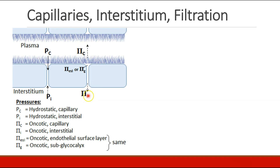We have interstitial oncotic pressures. And now we've seen we also have what we can call an endothelial surface layer, or a subglycocalyx oncotic pressure. It's inside the capillary, but it's really at the bottom of this glycocalyx where there aren't a lot of proteins.